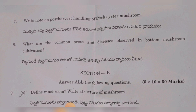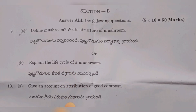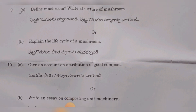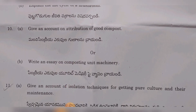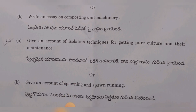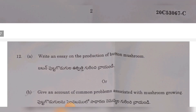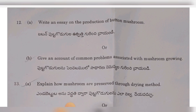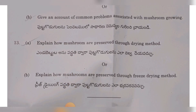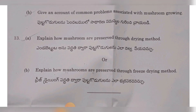What are the common pests and diseases observed in button mushroom cultivation? Now for the essays: Define mushroom and write the structure of a mushroom. Explain the life cycle of a mushroom. Give an account of good compost. Write an essay on composting unit machinery. Give an account of isolation techniques for getting pure culture and their maintenance. Give an account of spawning and spawn running. Write an essay on the production of button mushrooms. Give an account of common problems associated with mushroom growing. Explain how mushrooms are preserved through drying and freezing methods. That totals 8 short answer questions and 10 essay questions — 18 questions in all.